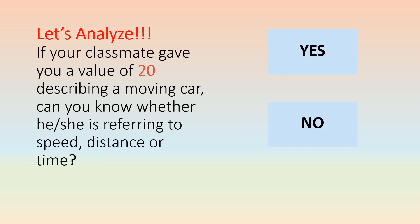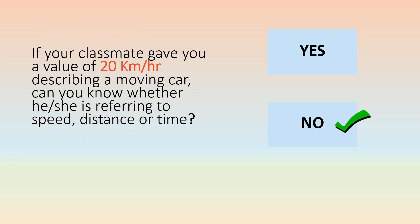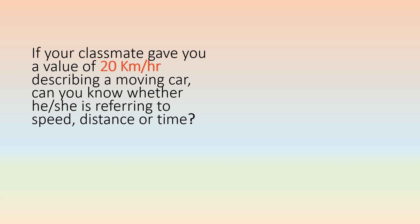Let's analyze. If your classmate gave you a value of 20 describing a moving car, can you know whether he or she is referring to speed, distance, or time? But what if your classmate gave you a value of 20 kilometer per hour describing a moving car — can you know whether he or she is referring to speed, distance, or time? The answer is yes. The correct answer is speed. And that is the importance of having a standard unit.